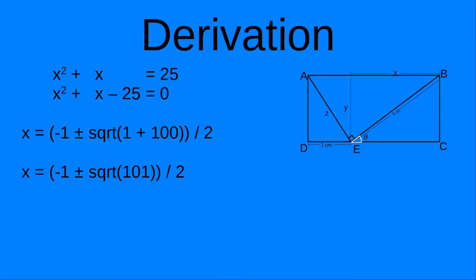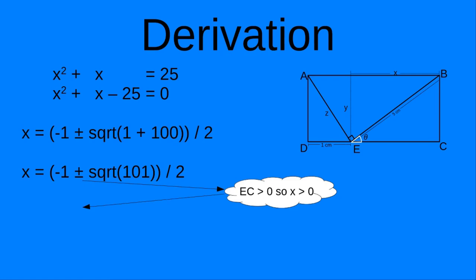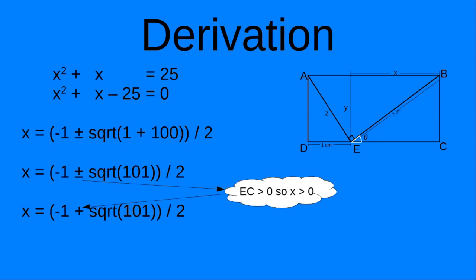You may be wondering — plus or minus? Does that imply two different solutions? Well, this is a geometric problem, not purely algebraic. We know X equals EC, and EC must be greater than zero. So we check: negative one plus the square root of 101 all over two — that one is greater than zero. That's our valid solution.